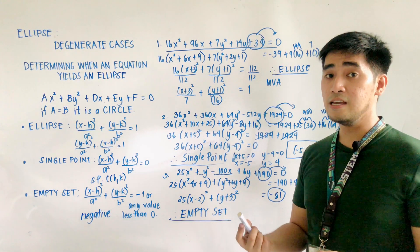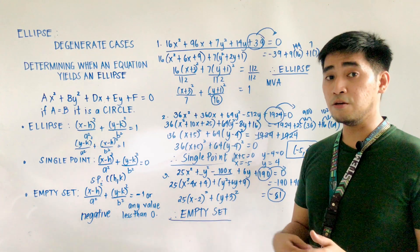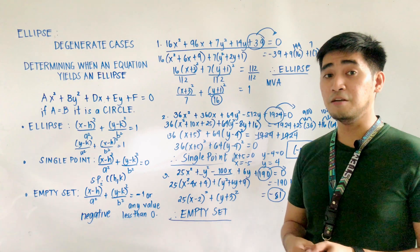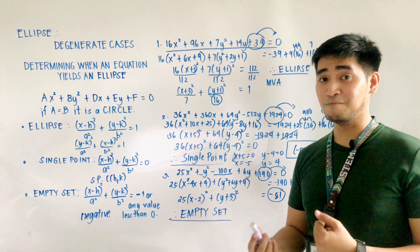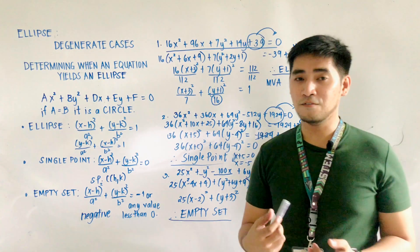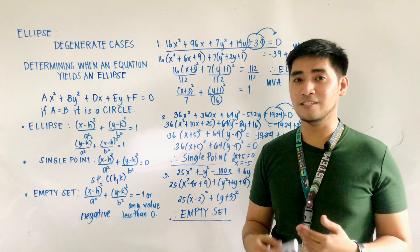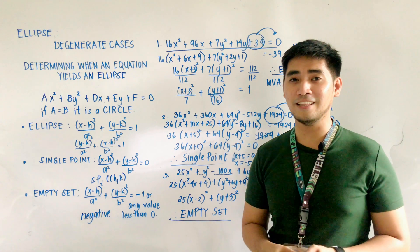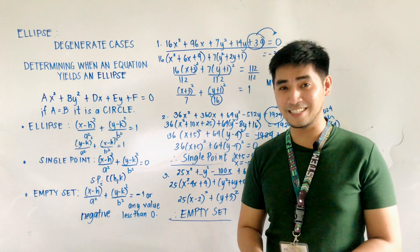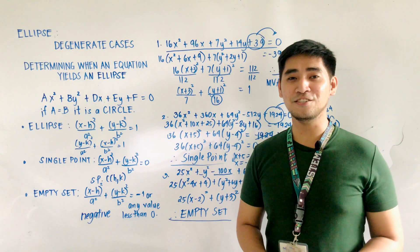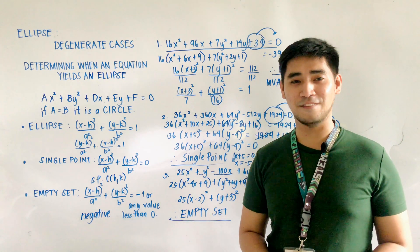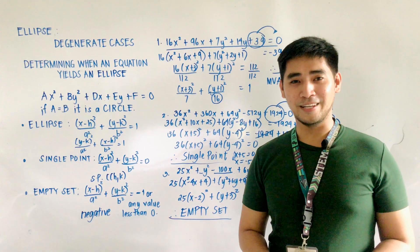Always remember that if a is equal to b, or the coefficients of x² and y² are the same, it is not anymore considered an ellipse — it is considered a circle. If you have comments, suggestions, or questions, do not forget to message me on Facebook, Twitter, or Instagram. Once again, I am Engineer Jod Edward Hernandez saying that mathematics is always fun. Goodbye and God bless.